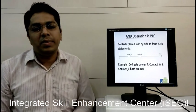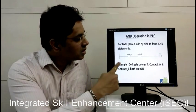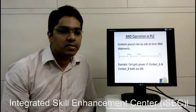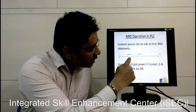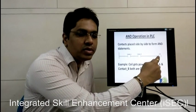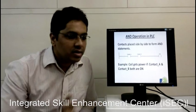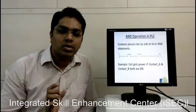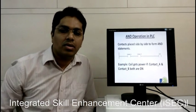How can we represent this in PLC? We have shown over here there is an AND operation in the PLC. Contacts placed side by side to form AND logic. Contact A and contact B with output as coil. When coil gets powered, when contact A and contact B both are ON. If one of them is OFF, output is OFF.